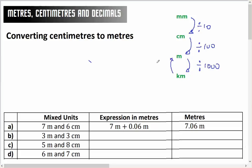Kilometres back to metres, I times by 1,000, metres to centimetres, I times by 100, and centimetres to millimetres, I times by 10.